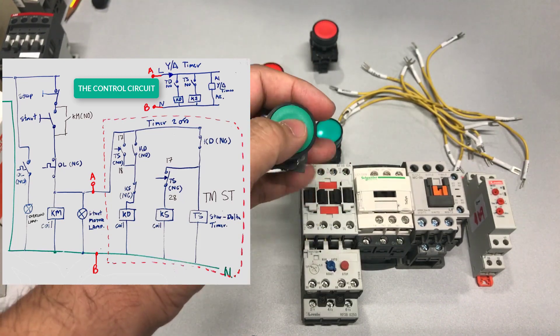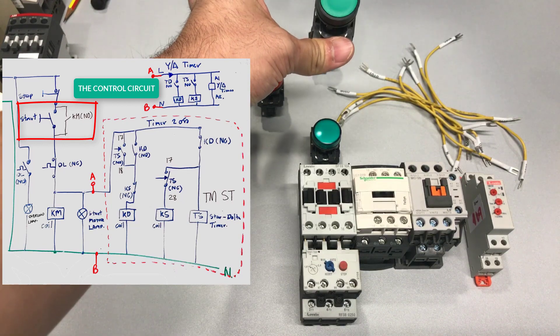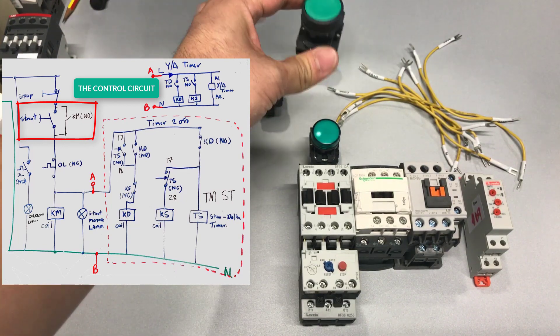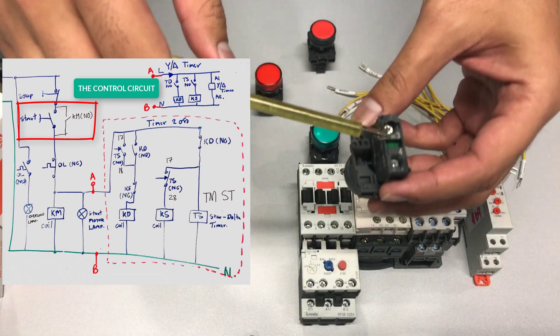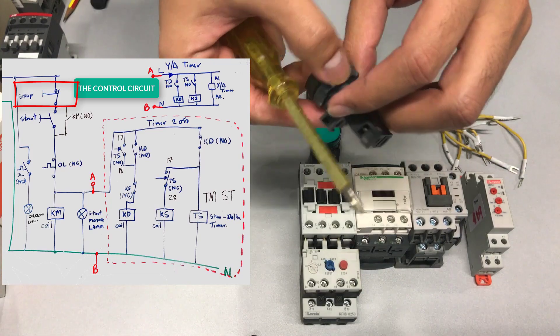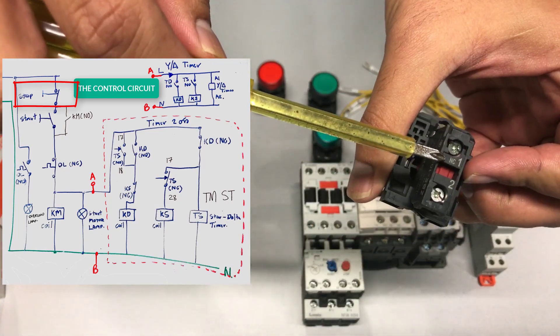This green push button is used as a start button. In this case, we will use it to start the motor. It is a normally open push button. You can see from the symbol NO at the bottom. The red stop button is a normally closed push button, and you can see from the bottom here label NC.